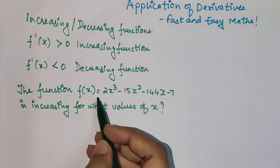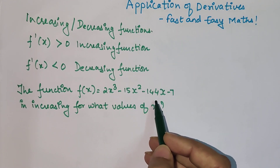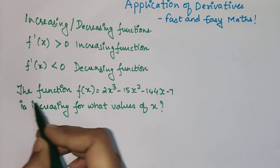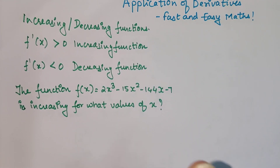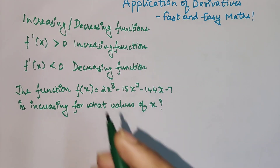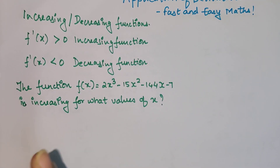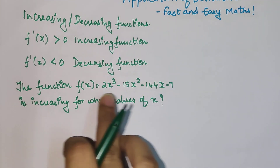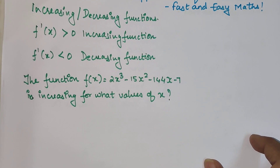The function f(x) = 2x³ - 15x² - 144x - 7 is increasing for what values of x? They have already said it is an increasing function, which means f'(x) will be greater than 0, and after finding f'(x), you need to find the values of x for which this function is increasing.